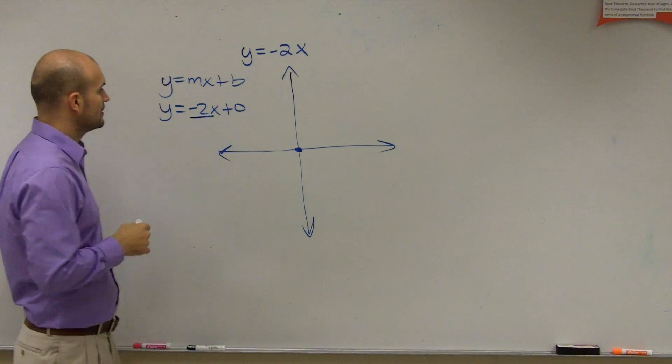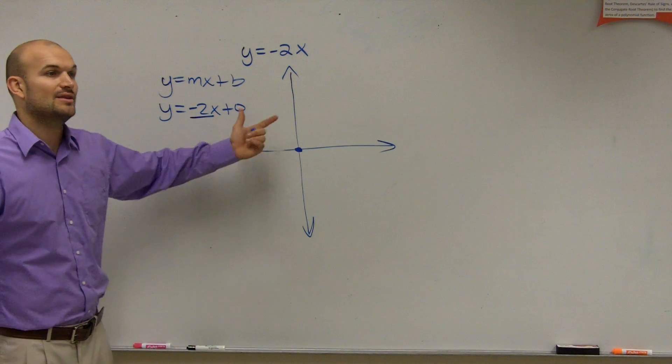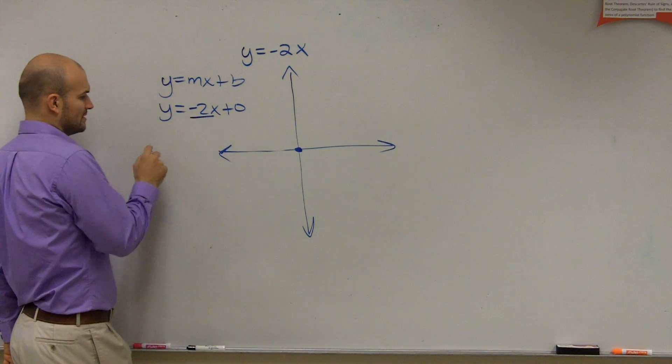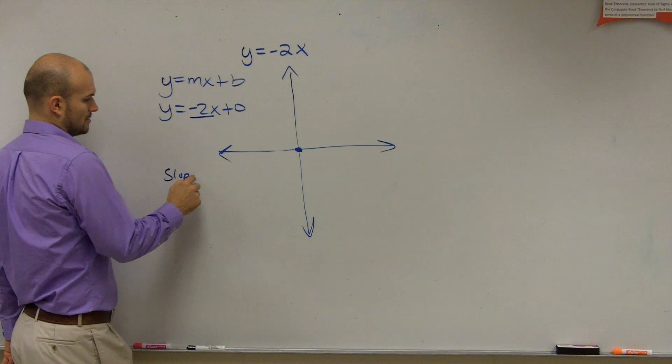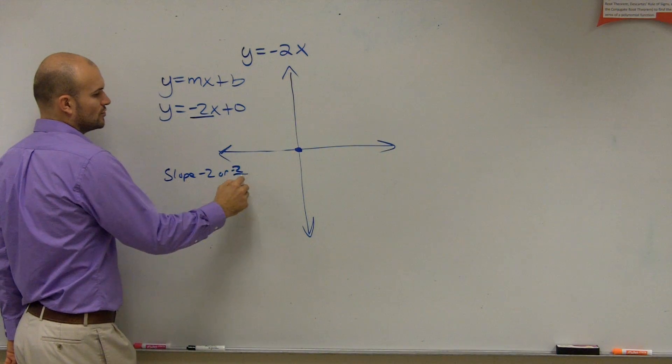Yes, you're right. So now my x and my y, because it's at the origin, right? The x and y-intercepts are at 0. Now remember my slope is negative 2, or negative 2 over 1.